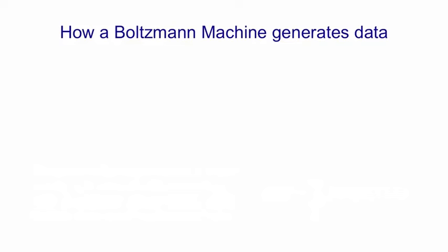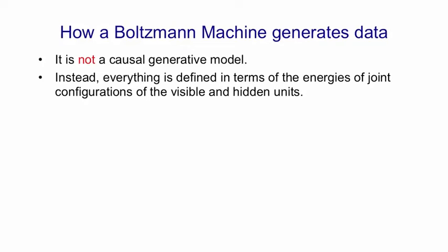A Boltzmann machine is an energy-based model, and in this kind of model, you don't generate data causally. It's not a causal generative model. Instead, everything's defined in terms of the energies of joint configurations of visible and hidden units.